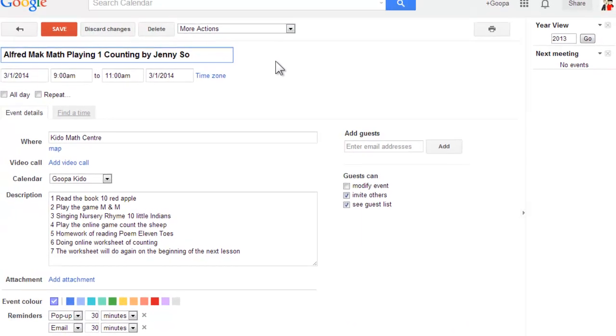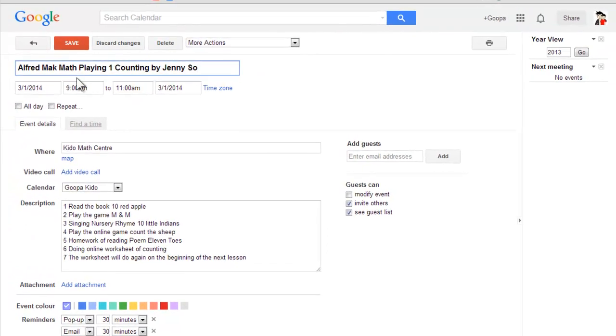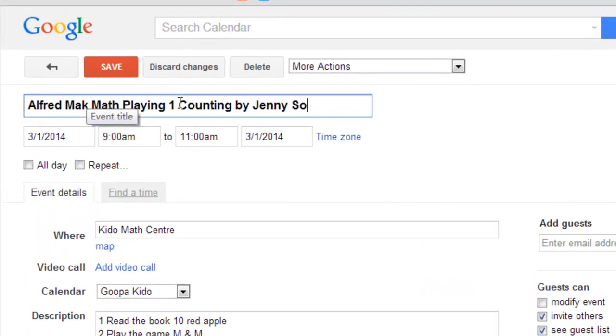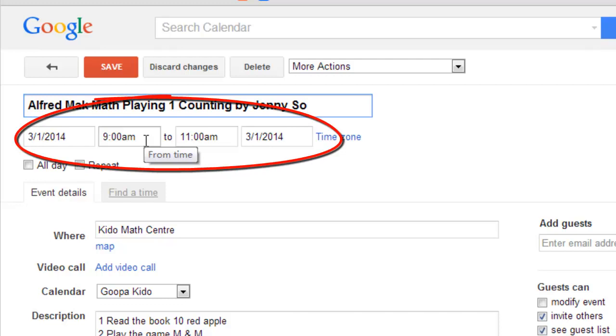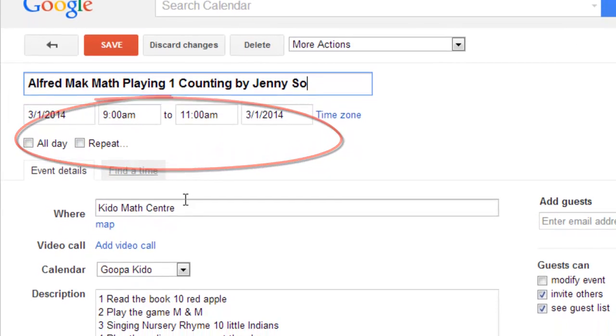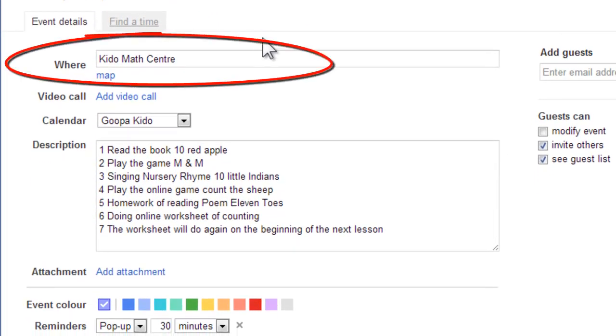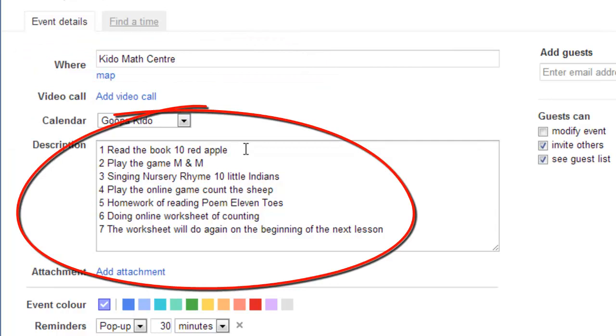And you will find the appointment. This appointment is for Albert Mack, the first math training. This lesson is for counting, organized by Jenny Zhou. The time is on the 3rd of January, 9 a.m. to 11 a.m. The place to be held is Keylor Math Center. The description is about the content of the appointment.